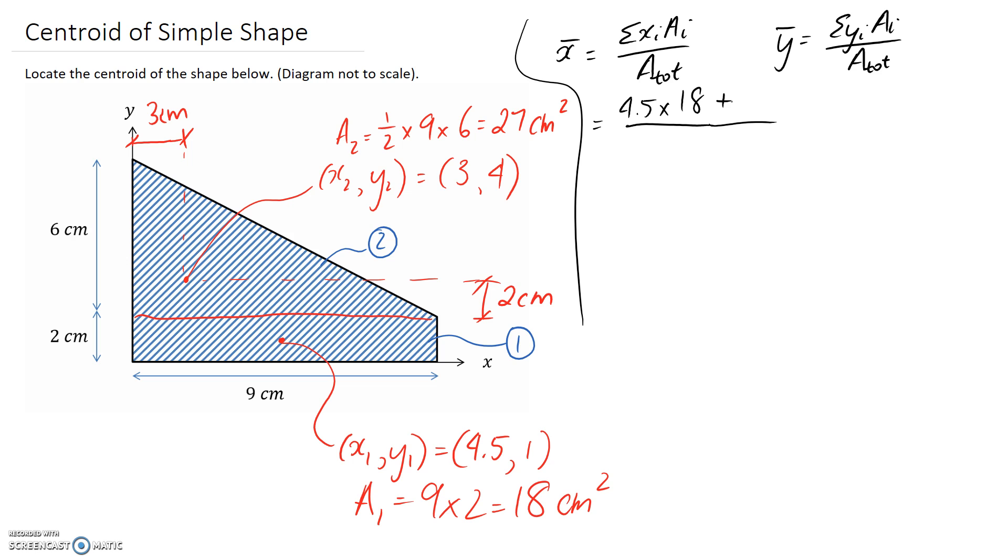We need to add that to the x value, which came out to 3 for the second shape, and the area for the second shape, which came out to 27. On the bottom line of our equation, we need the total area, so that's going to be this 18 plus the 27. So we can calculate this, and it works out to be 3.6 centimetres.